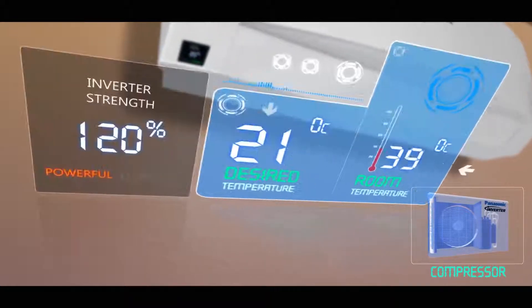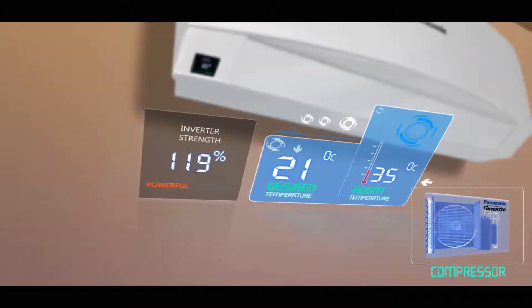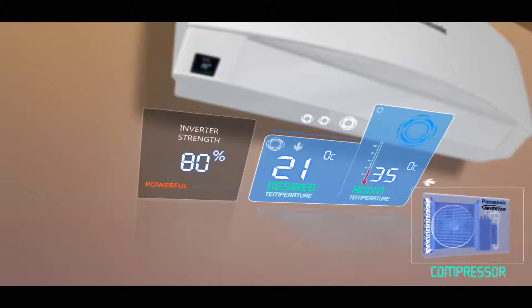But as the temperature of the room goes down, the air conditioner requires less power, hence adjusting its performance level to 80 percent.